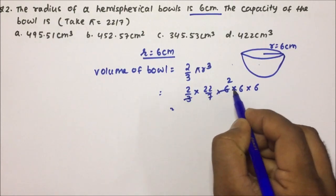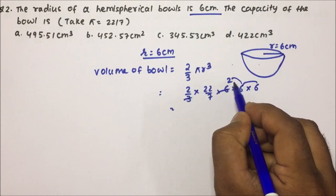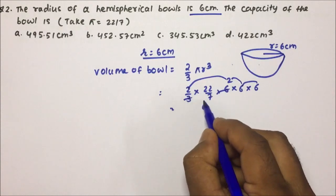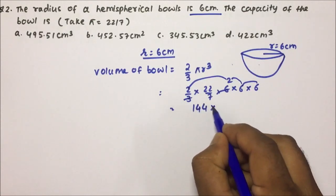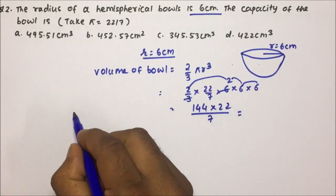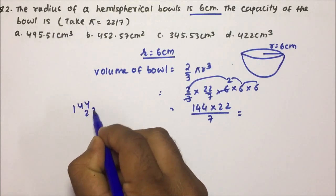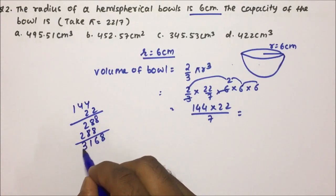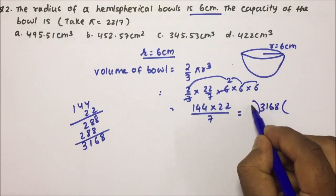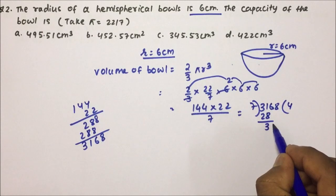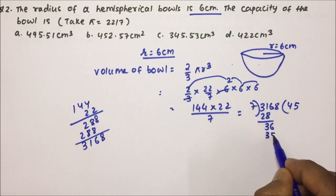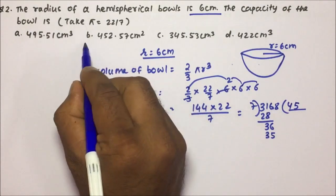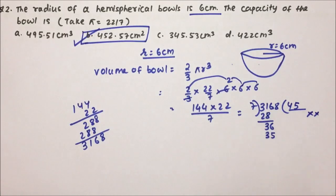So 2/3 × 22/7 × 6³. That is 2/3 × 22/7 × 216. After simplification: 6×6 = 36, 36×2 = 72, 72×2 = 144, then 144 × 22 divided by 7. Multiplying gives 3168, and dividing by 7 starts with 452... we can see this matches only option B. Friends, do not do the complete calculation unnecessarily when you can get the answer just from the first two terms.